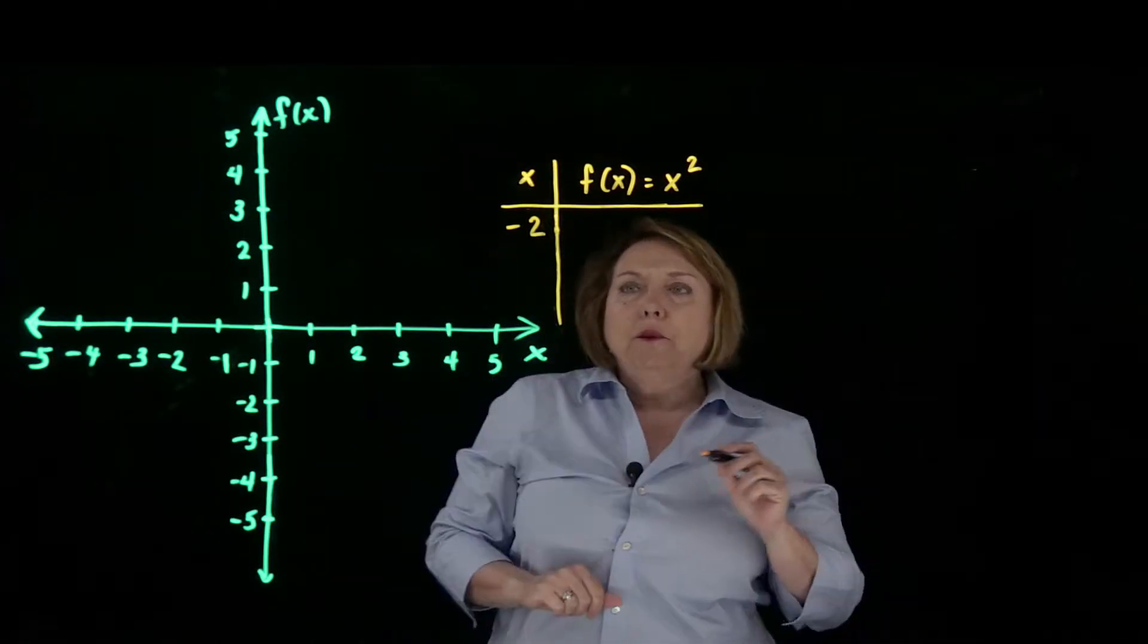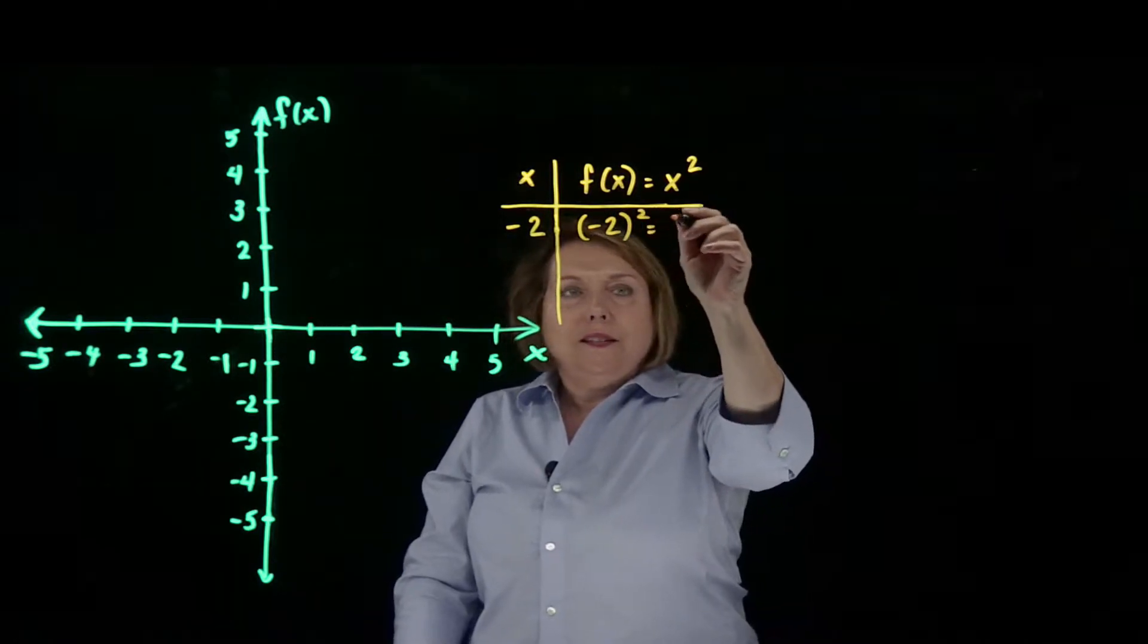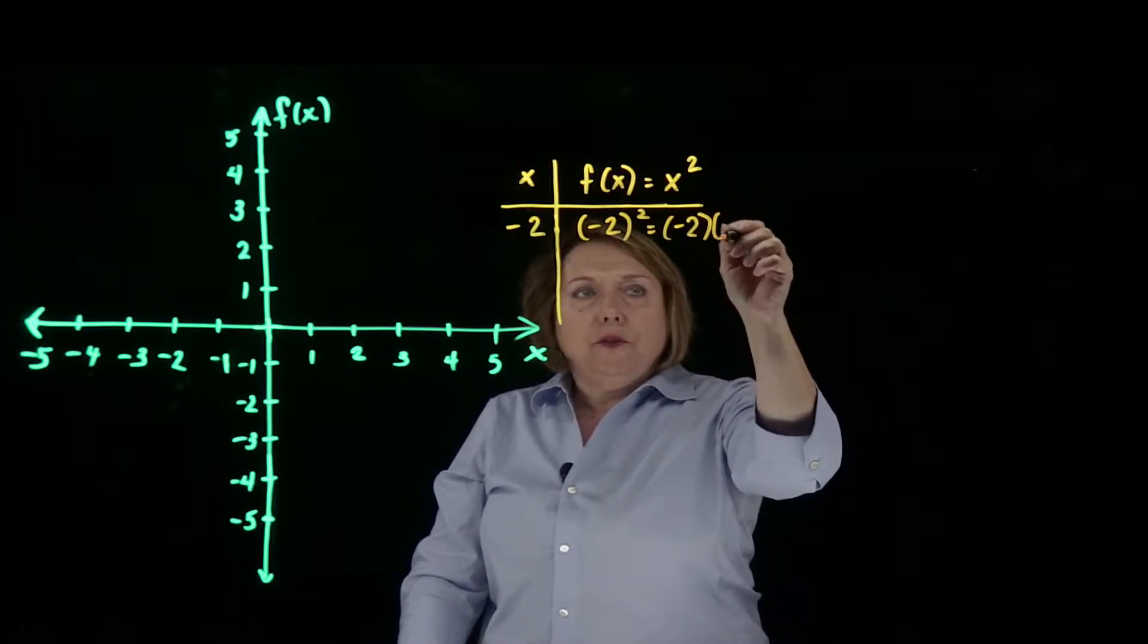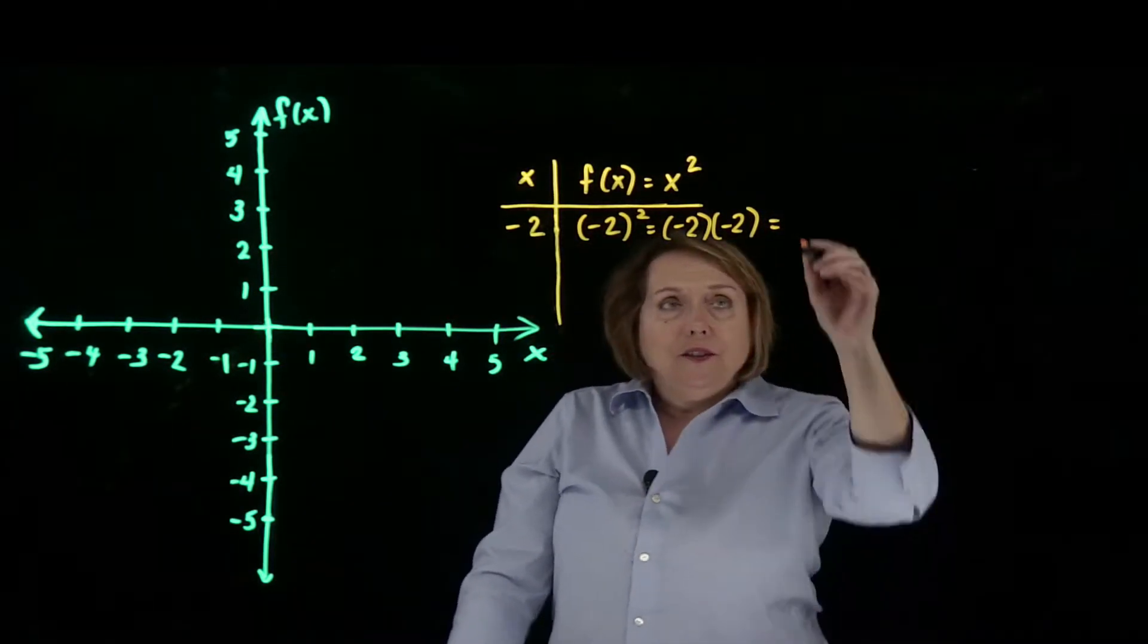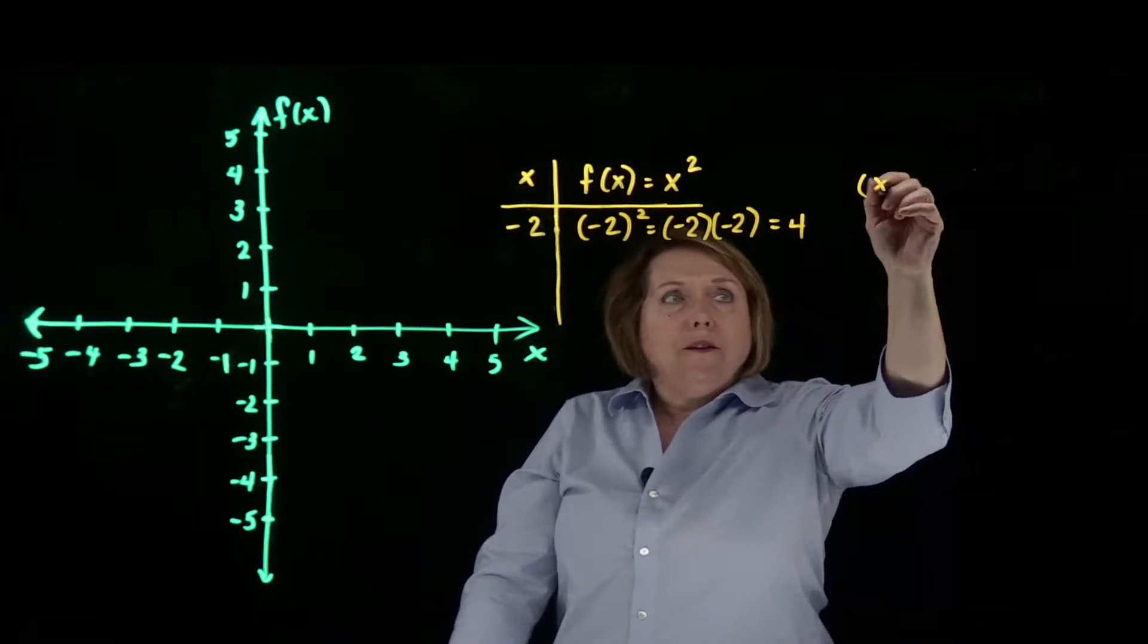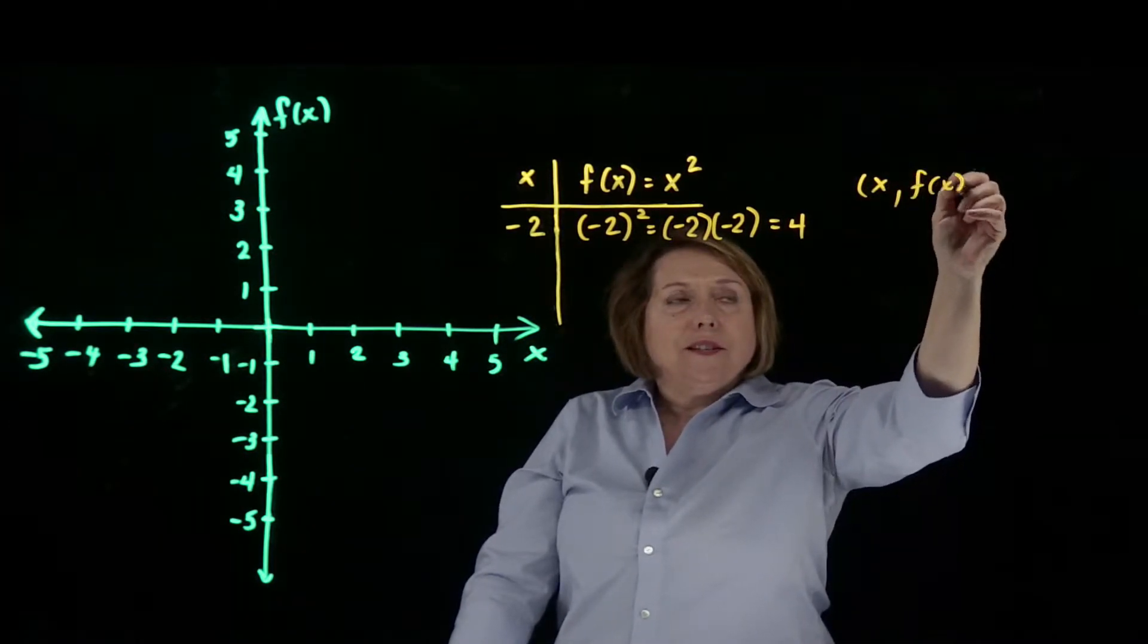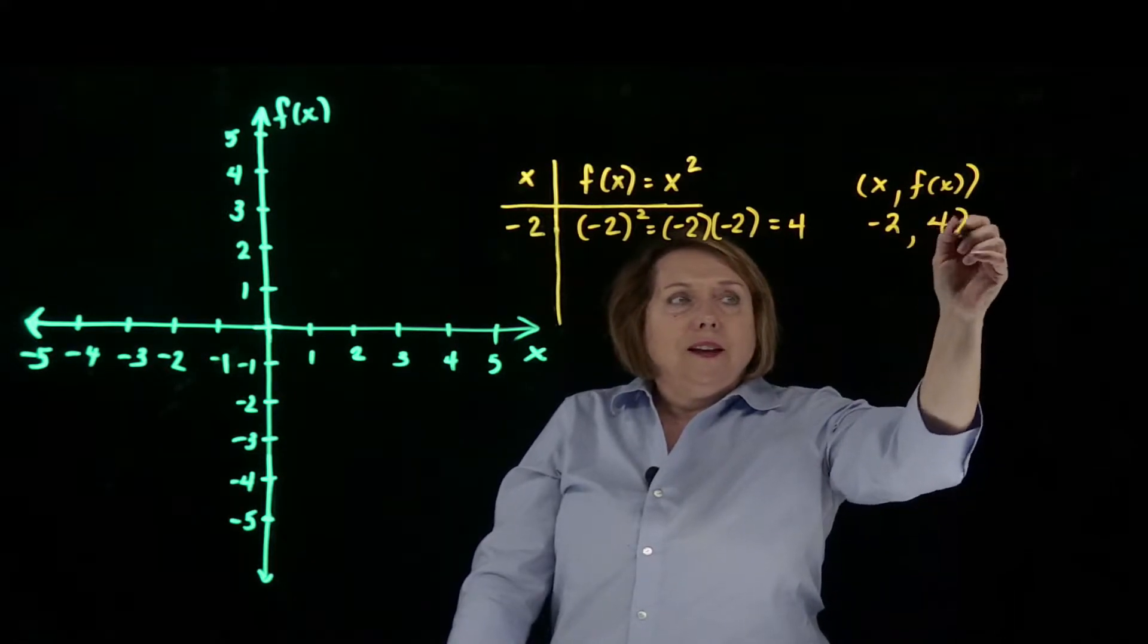So x equals negative 2, when I square negative 2, that's negative 2 times negative 2. Remember, negative times negative is positive, so we'll have a positive 4 here. So my ordered pair x, f of x will be negative 2 comma 4.